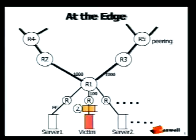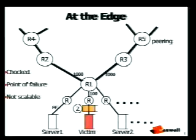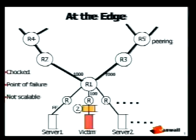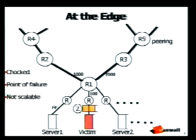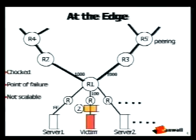Another approach is to build a special device that knows how to sieve out the bad packets from the IP stream and leave the good packets going through, deployed at the edge right before the victim. However, this approach won't work because it's too close to the target. In the case of a 500 megabits attack, the line going into the router is choked, and even a supercomputer in front of the target won't solve the problem. In addition, such a solution is not economical — you need to deploy special equipment for each additional potential victim, which is non-scalable.